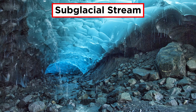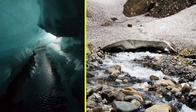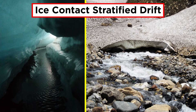Not only can basal till be carried by ice, but it can also be carried by subglacial streams, which can be either beneath the glacier or on its sides along the valley walls. Till that is modified or deposited by these subglacial streams gets sorted and rounded by the meltwater and is called ice contact stratified drift.